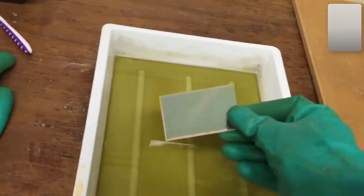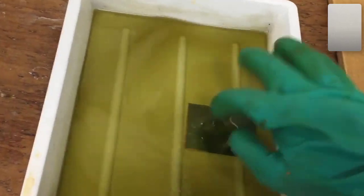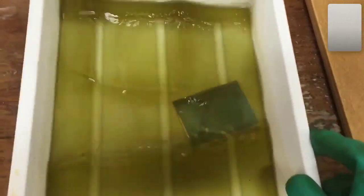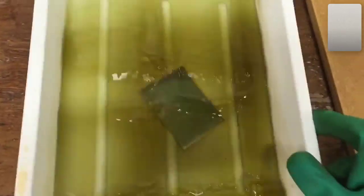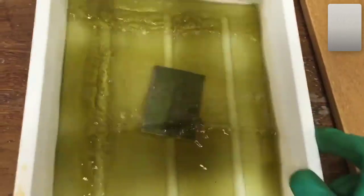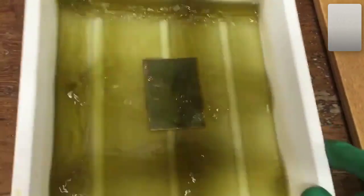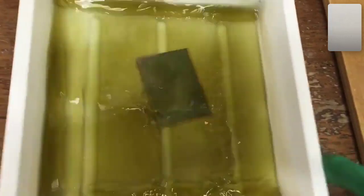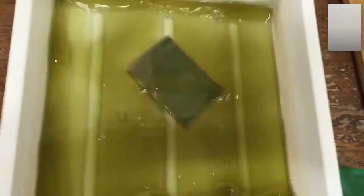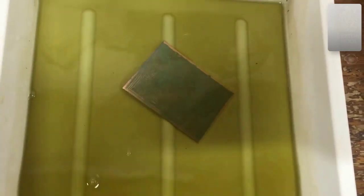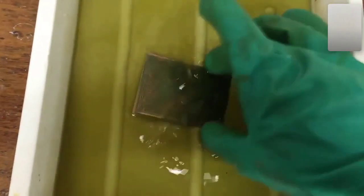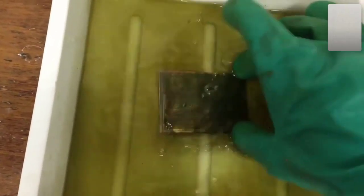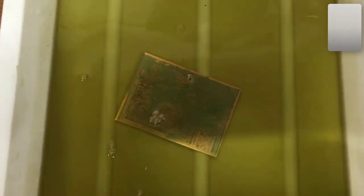Here it goes into the developer solution and you'll see as I start to slosh it around, fairly quickly the developer will remove the photoresist where it's been exposed to the ultraviolet light and you'll see that our circuit is starting to magically appear. A bit more sloshing around and we're nearly there.